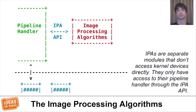In addition, for every platform, there is an IPA interface which defines what functions, callbacks, and structs are available for communication between the pipeline handler and its IPA. As the pipeline handler is required to be open-source, so is this IPA interface definition. This makes it a lot easier to experiment with and implement open-source IPAs, which was a lot more difficult before without a camera stack.